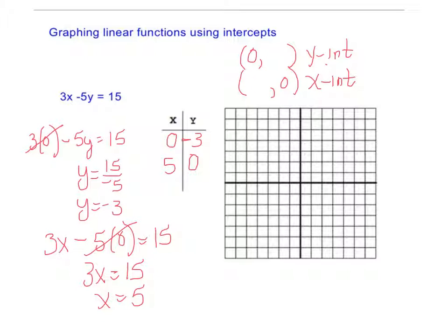So those are two points. That's all I need to graph a line. You need two points to graph a line. You can determine slope. You can determine everything from two points. So I'm going to graph these. I start at the center. This is the origin.